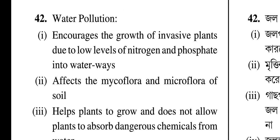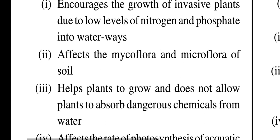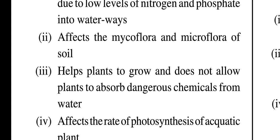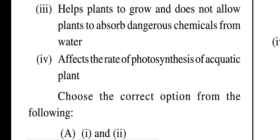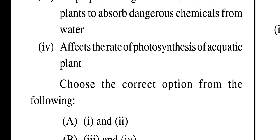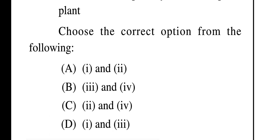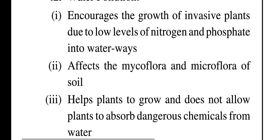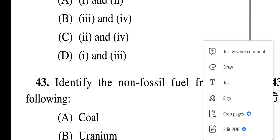Question 42: water pollution — which option is correct? It encourages the growth of invasive plants due to low levels of nitrogen and phosphate into waterways; it affects the mycoflora of soil; it helps plants to grow and does not allow plants to absorb dangerous chemicals from water; it affects the rate of photosynthesis of aquatic plants. Choose the correct answer: one and two, three and four, two and four, or one and three. Answer 42 C will be correct — that means two and four.